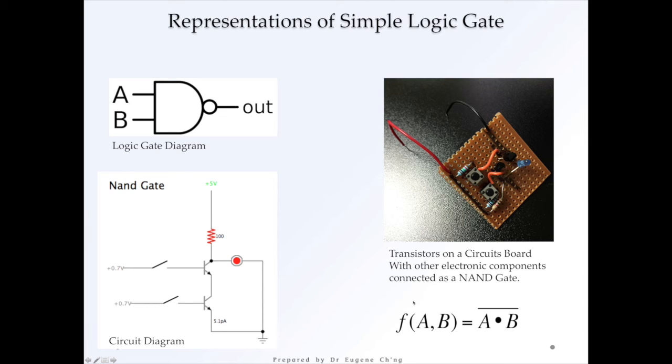Now, we also have symbolic representation. We've got a function of A and B, and that's the output. The output is A and B with a NOT. So, this is a NOT A and B, right?